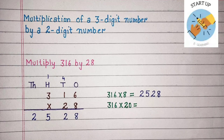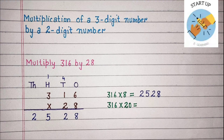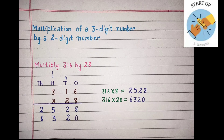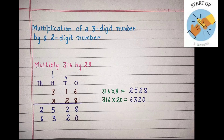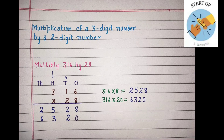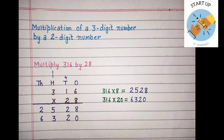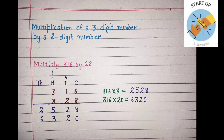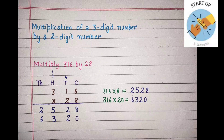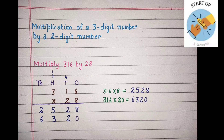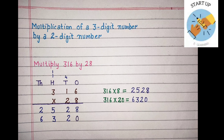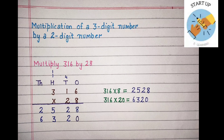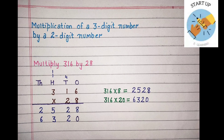Now we will multiply 316 by 20. As we are multiplying the multiplicand by 20, so at 1's place we will write the 0 first. Now let's multiply it. 2 × 6 = 12. 2 will be written under 10's place and 1 will be carried on 100's. 2 × 1 = 2, plus 1 which was carried on 100's, we will write 3 under 100's place. Now 2 will be multiplied by the 3: 2 × 3 = 6, so it will be written under 1000's place. By multiplying 316 by 20, we have got the second partial product, that is 6320.